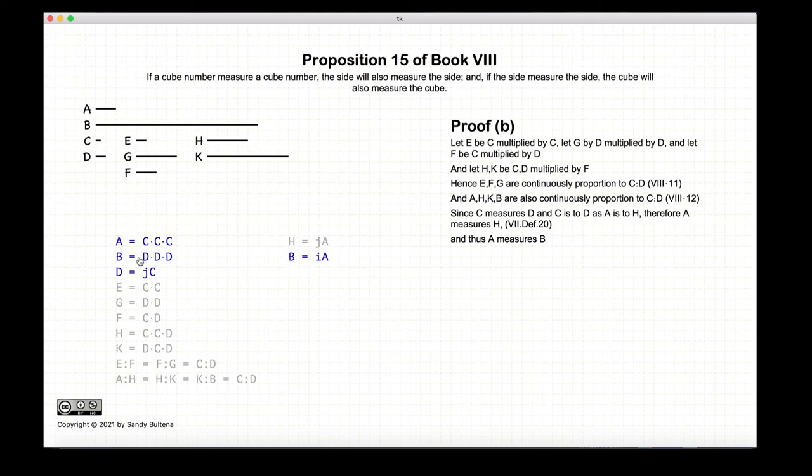So again, two cubed numbers. We have c measures d, and that leads to a also measures b. And that is it for both parts of this proposition.